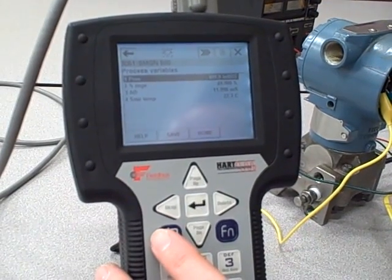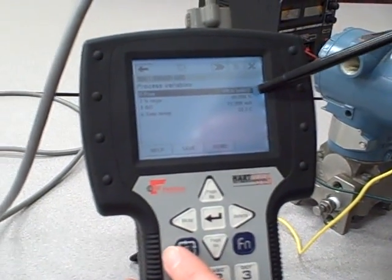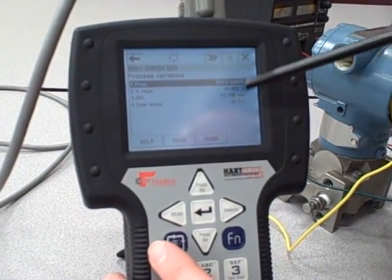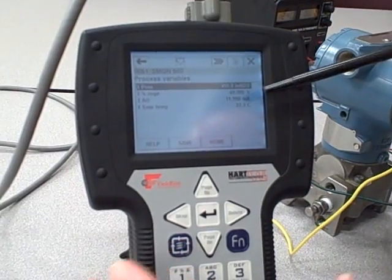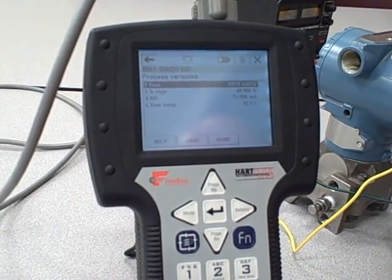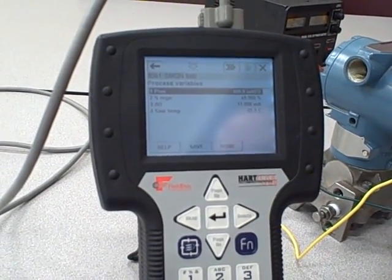As I said before, it was about 500 inches of water column. That is approximately 50% range on the transmitter for a 0 to 1,000 inch range. Analog output about 11.998 or 12 milliamps, and sensor temperature. This is the ambient temperature of the differential pressure sensor at room temperature, about 22 degrees Celsius.